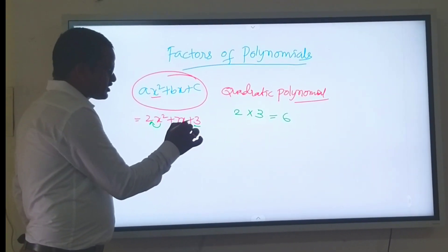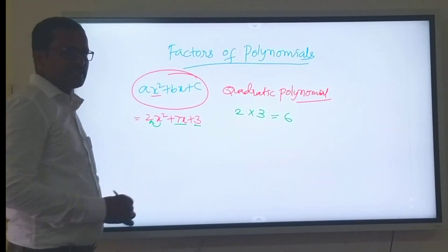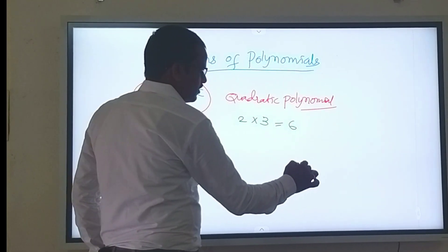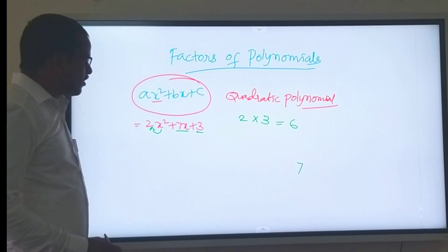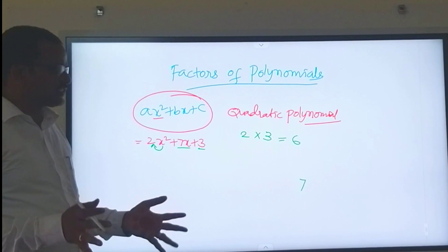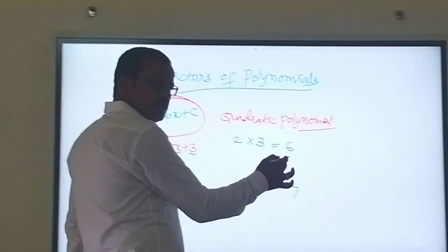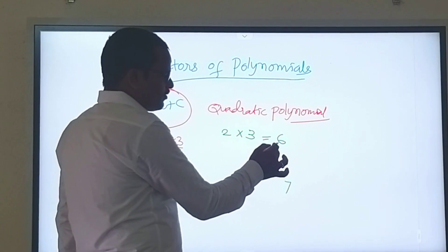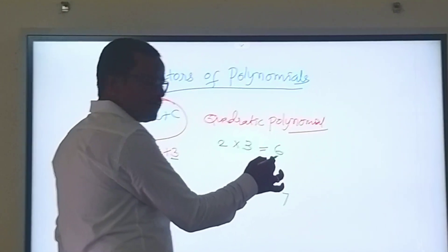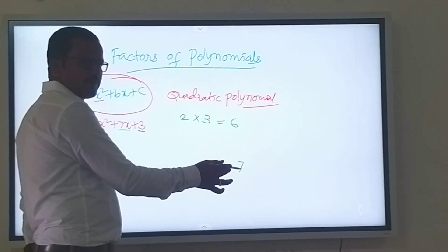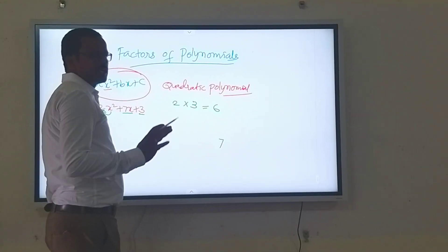First we have to observe, next we have to observe what is the coefficient of x. What is the coefficient of x here? 7. Now, 6 can be split in a single way, such that if you multiply these two factors, you must get 6. And then, if you add these two factors, 7. That is the condition.